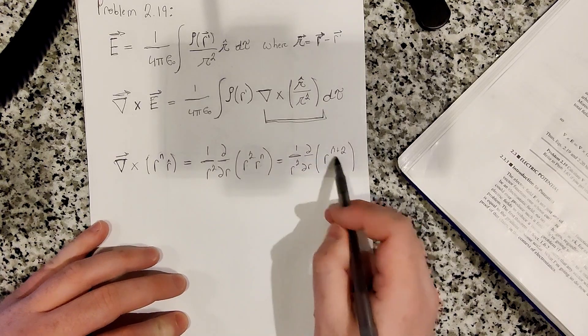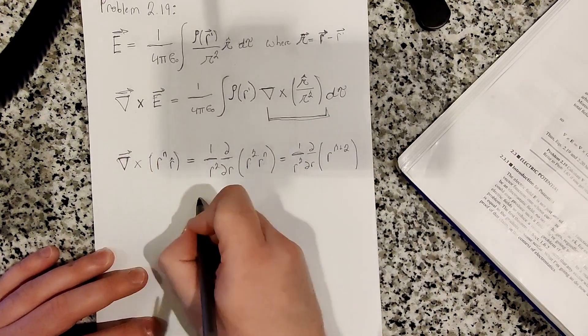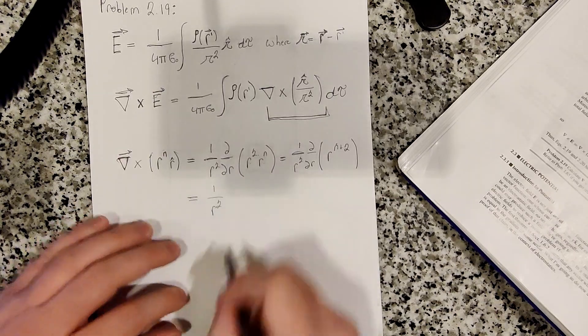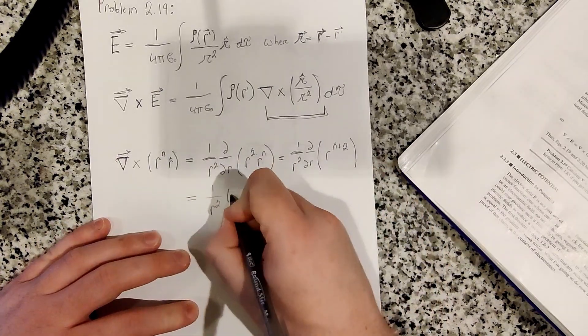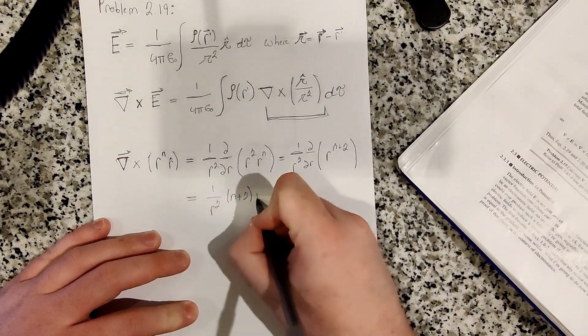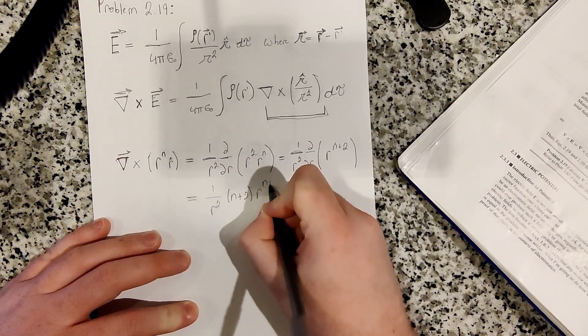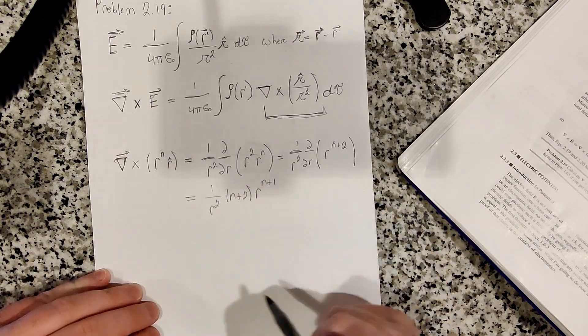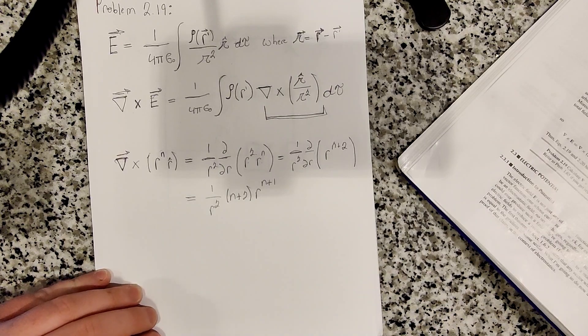Now we take the derivative with respect to r. So we have 1 over r squared. And the derivative with respect to r is n plus 2 times r to the n plus 1. Because you subtract 1 from the power, so it's n plus 2 minus 1, which is n plus 1.